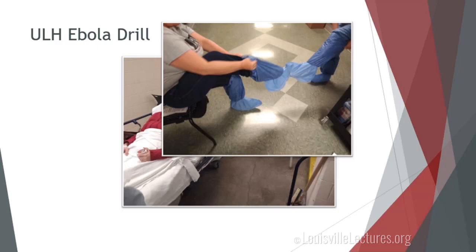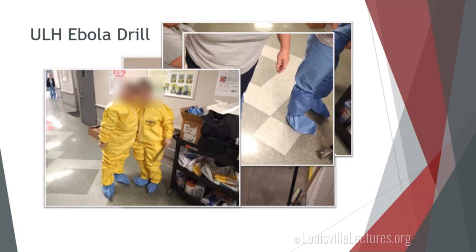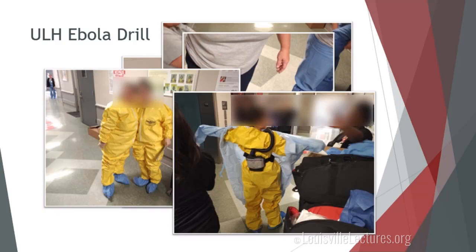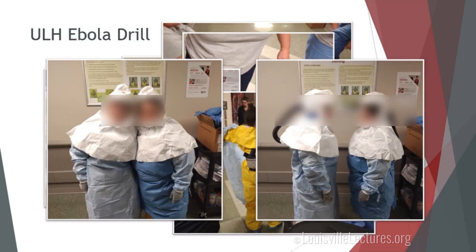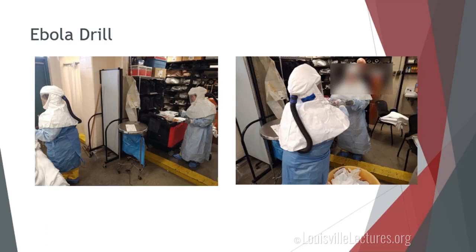It was determined that blood would need to be drawn. The nurses who had been trained in putting on personal protective equipment, or PPEs, began donning their attire. After doing so, they were placed in their PAPRs — which allow for ventilation — and they actually went in to evaluate the patient. The photograph on the left shows the nurse drawing blood; that area is considered the hot zone. The other nurse, ready to collect the materials, is considered in the warm zone.